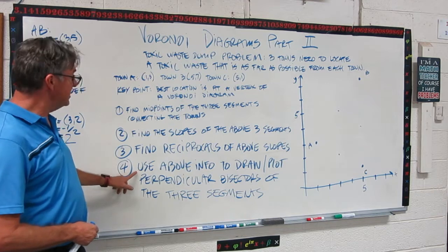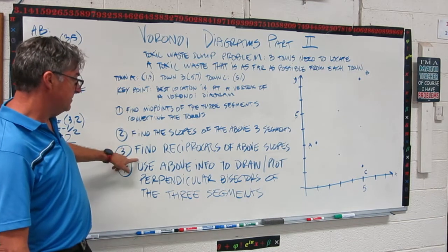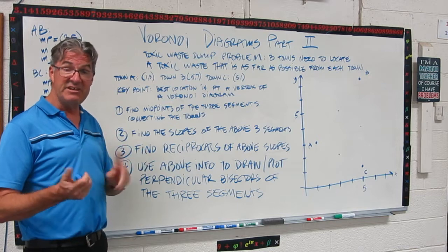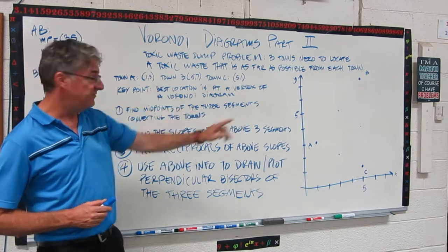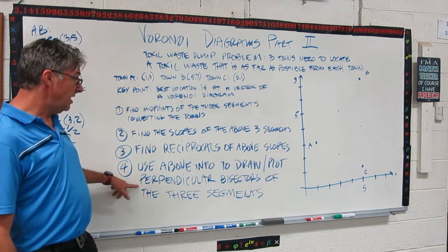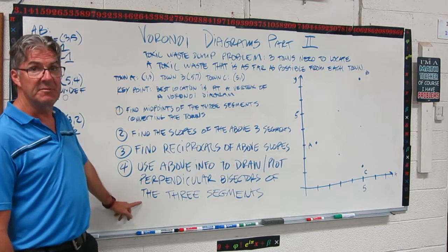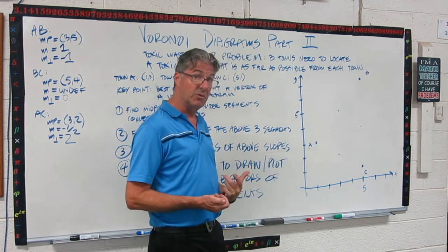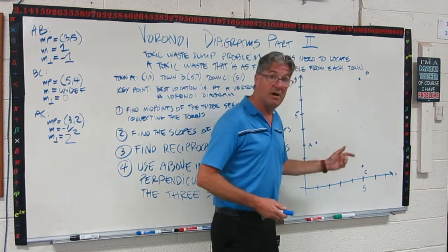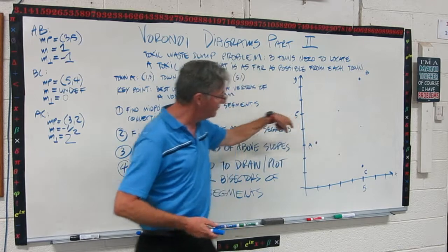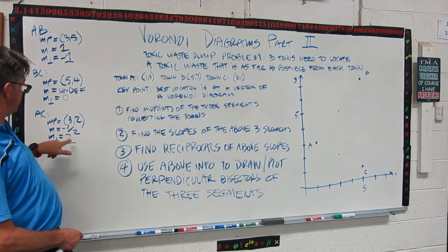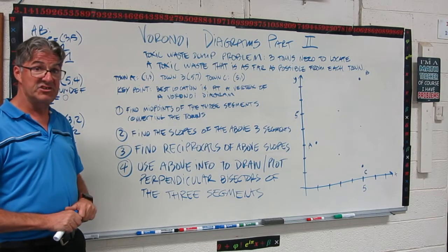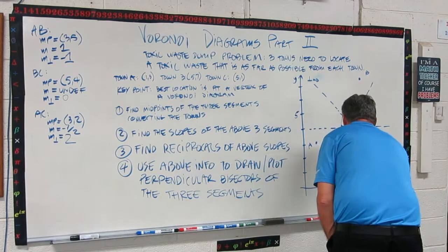I'm leaving this up on the side because we're going to use this in later steps. The next step is to use the above info, namely our midpoints and our negative reciprocals to draw or plot. So plot would be if you're doing it on graph paper and you can be exact so you could plot it. Otherwise drawing it would be on a hand graph like the one I've done. But what you want to do is use that info to draw or plot the perpendicular bisectors of the three segments that we've been playing with. So what I did here in advance of that is I've marked my endpoints. These are my towns that want to be far from the toxic waste dump. And I've also put little dots for the midpoints of the segments that connect each of the towns. So I'm going to use those midpoints and these negative reciprocal slopes to draw the perpendicular bisectors. So go ahead and pause the video and give that a shot.